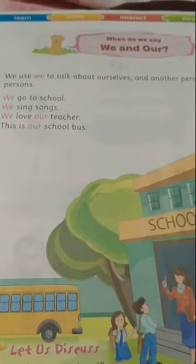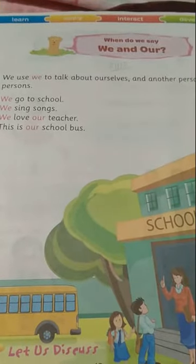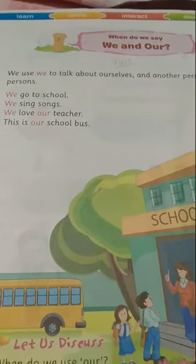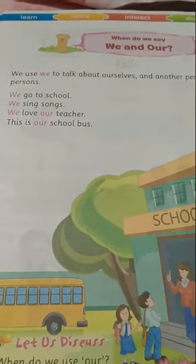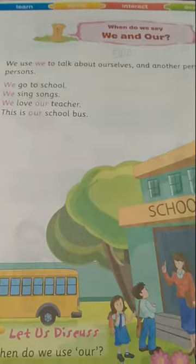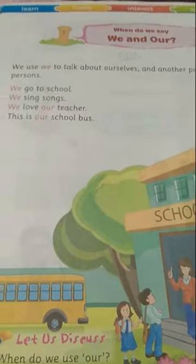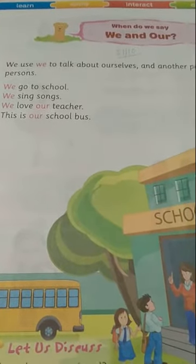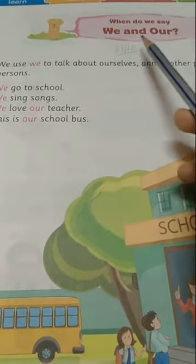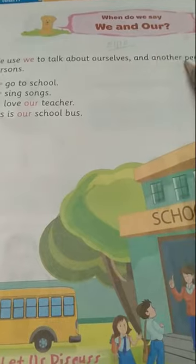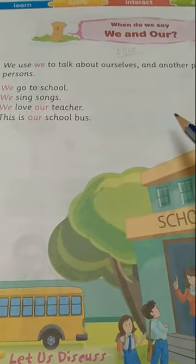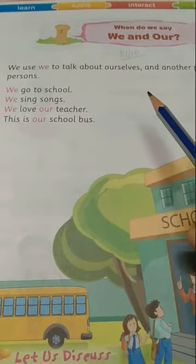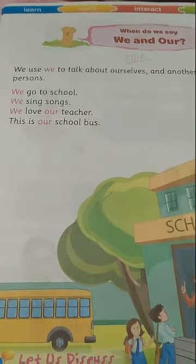Good morning everyone. Today is 21st of October 2020. This is UKG English text class. Today is our revision class. Today we revise the chapter: When do we say 'we' and 'our'? How do we say 'we' and 'our'?